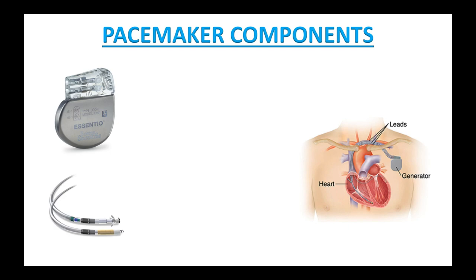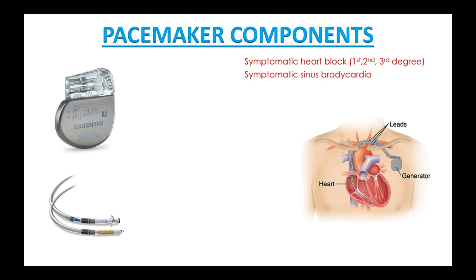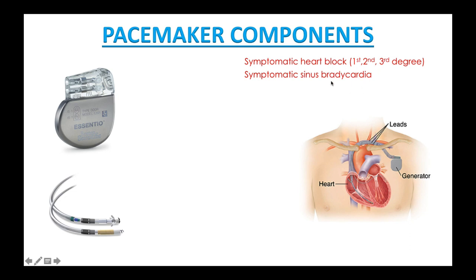Let's talk about the pacemaker device. A pacemaker is a small device placed in the chest or abdomen to help control abnormal heart rhythm. It uses electrical pulses to prompt the heart to beat at a normal rate. Pacemakers are used to treat arrhythmias — problems with the rate or rhythm of the heartbeat — such as symptomatic heart block (first, second, and third degree) and symptomatic bradycardia. Brady means slow, so bradycardia means slow heart rate. The opposite is tachycardia — tachy means fast, so tachycardia means fast heart rate. You need to know these terms for medical terminology. Another indication is atrial fibrillation with asymptomatic bradycardia. The doctor will decide what type of pacemaker the patient needs based on their heart condition.